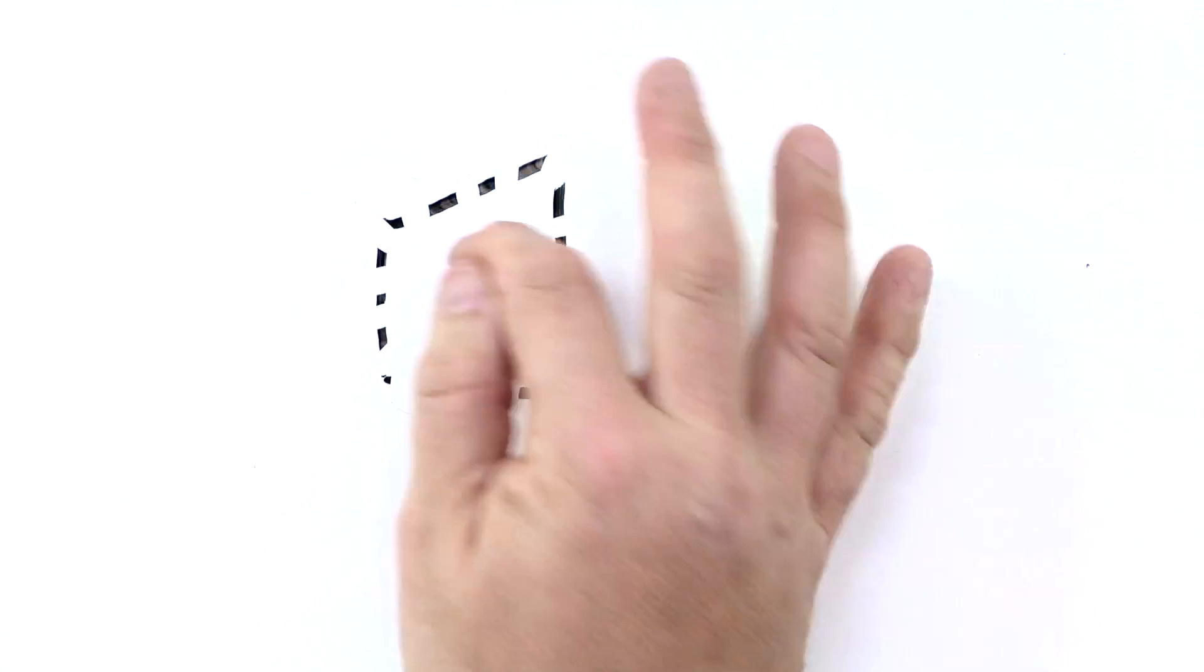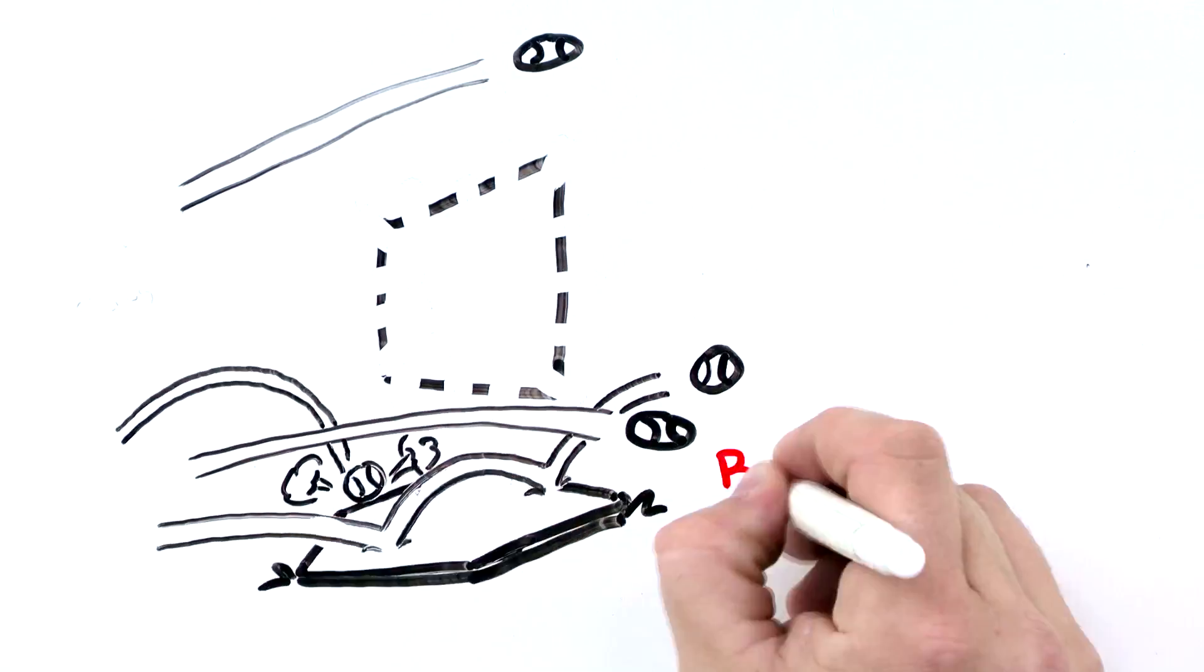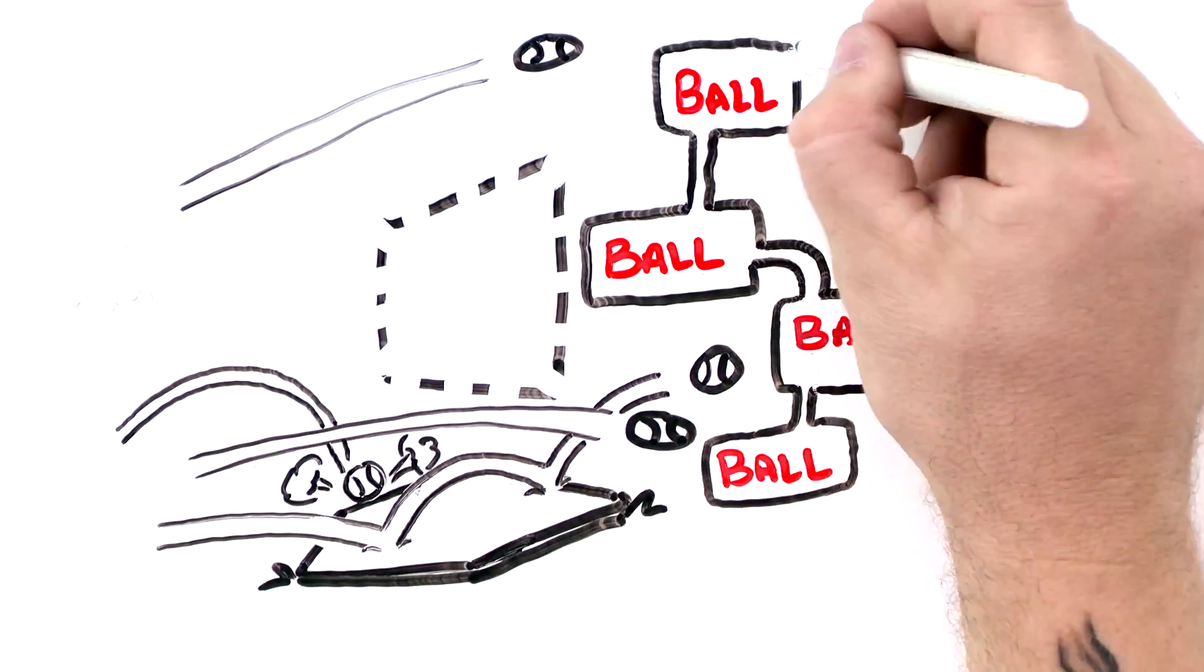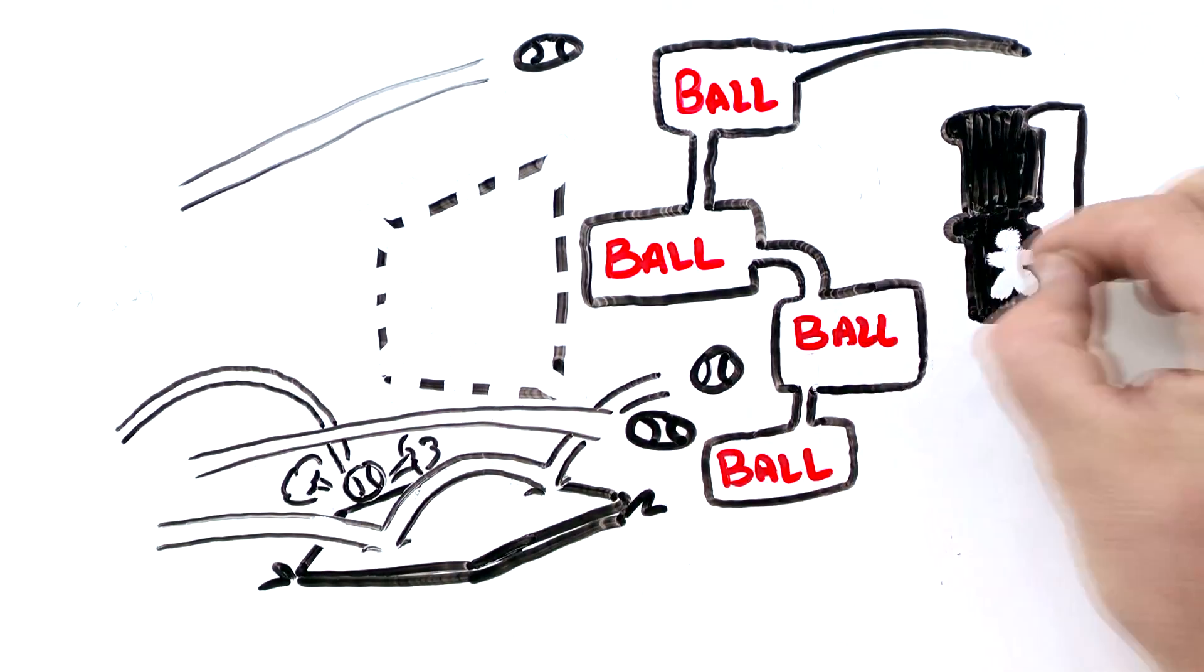Now if the pitcher throws four balls, which means a pitch that is not in the strike zone and the batter doesn't swing at them, the batter is automatically allowed to go to first base.